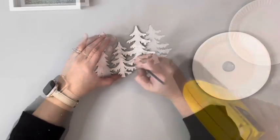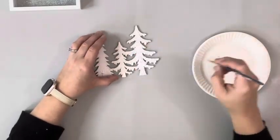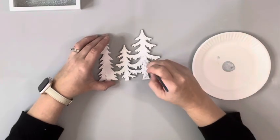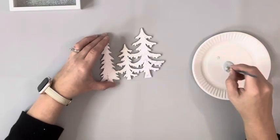I used a paintbrush and my finger to spread that out throughout the front of the trees, then added holographic glitter to the Snowtex as well.